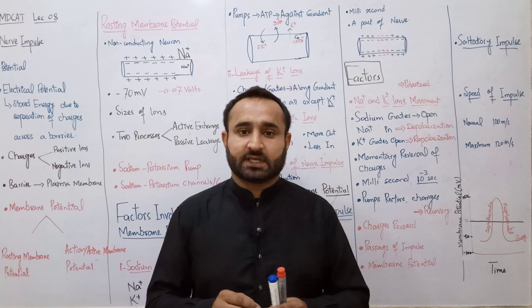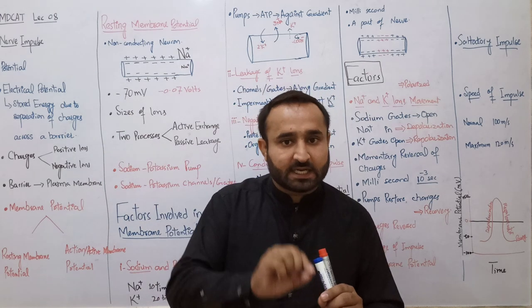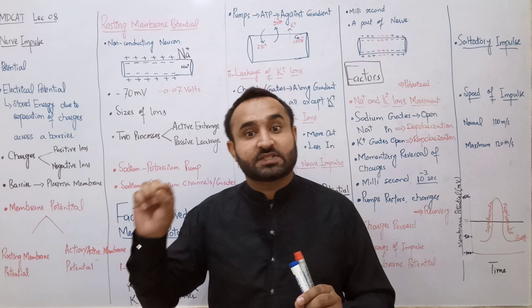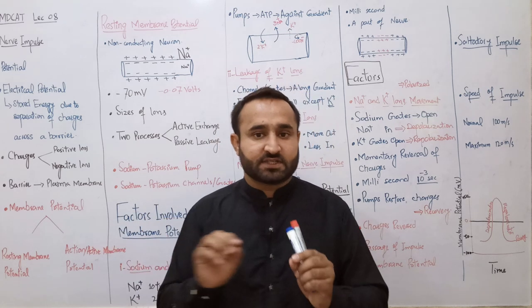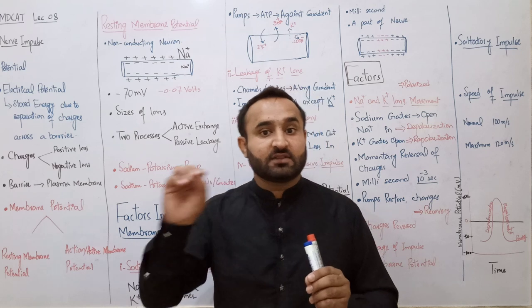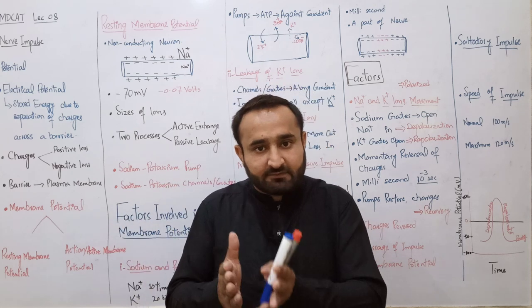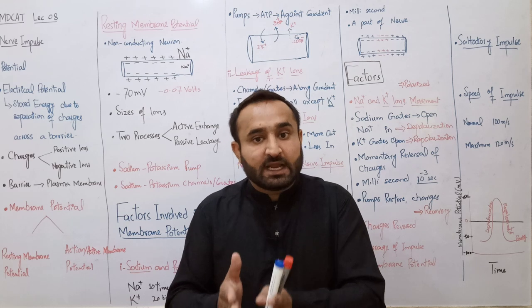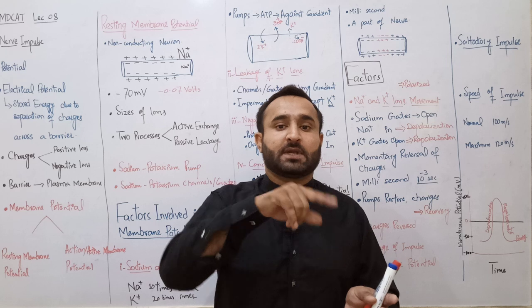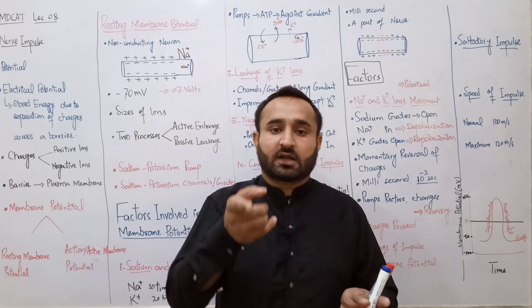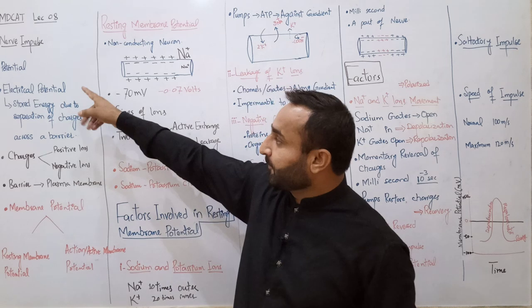Important definition: nerve impulse کیا ہے؟ Wave of electro-chemical changes which travels along the length of neuron, involving chemical reactions and ions movement across selectively permeable membrane across the cell membrane. This is the definition of nerve impulse.